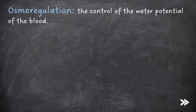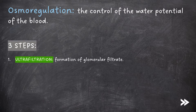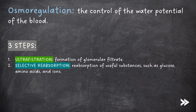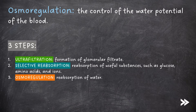So let's make a start. Osmoregulation is the control of the water potential of the blood. There are three main steps that we should know: ultrafiltration, which is the formation of the glomerular filtrate; selective reabsorption, which is the reabsorption of useful substances such as glucose, amino acids and ions; and then we have osmoregulation and the reabsorption of water.